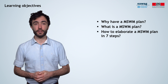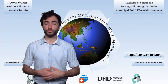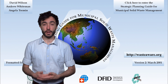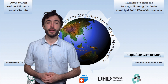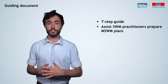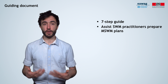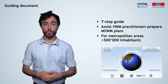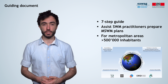The content of this module is taken from the manual shown behind me, entitled Strategic Planning Guide for Municipal Solid Waste Management, available online at the link shown here. The guide consists of seven steps which assist solid waste management practitioners prepare municipal solid waste management plans for metropolitan areas with more than 500,000 inhabitants in low-income countries.